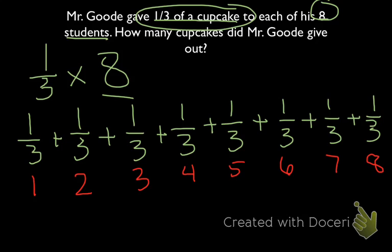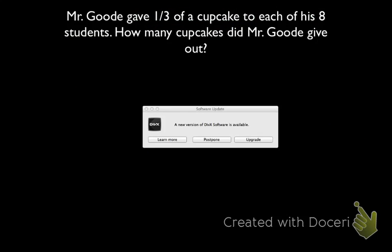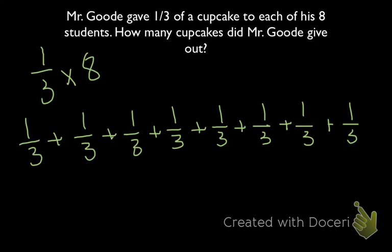So the last thing we do, after we've represented our multiplication equation as a repeated addition, is that we know if we were to add or subtract fractions, we have to make sure the denominator is the same. So here all the denominators are 3, so all we have to do is add the numerators. So 1 plus 1, eight times, is going to give us 8, and then our denominator is going to stay at 3.